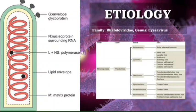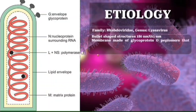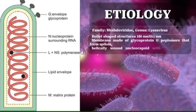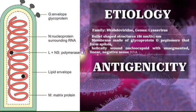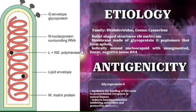They have a typical bullet-shaped morphology, approximately 180 nanometers in length and 65 nanometers in width. The lipid envelope is embedded with glycoprotein G peplomers that form spikes surrounding a helically-wound nucleocapsid with unsegmented, linear, negative-sense RNA. Glycoprotein G confers important antigenic properties to the virus, mediating binding to acetylcholine receptors in neural tissues and inducing hemagglutination-inhibiting and protective antibodies. The nucleocapsid protein also induces complement-fixing antibodies.